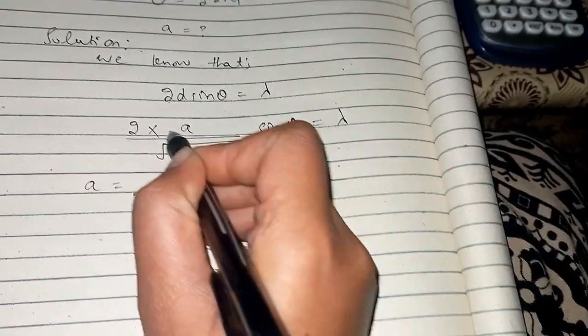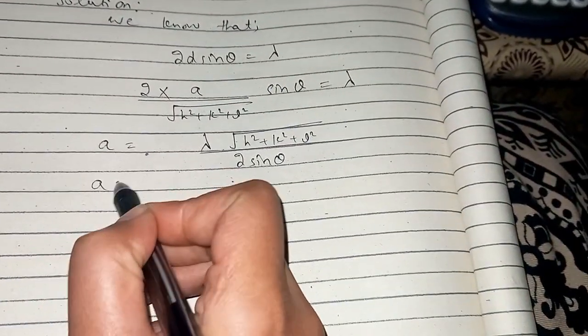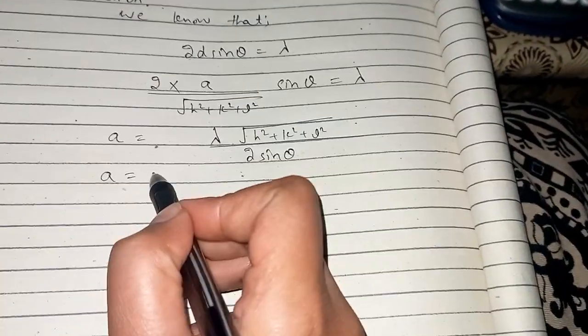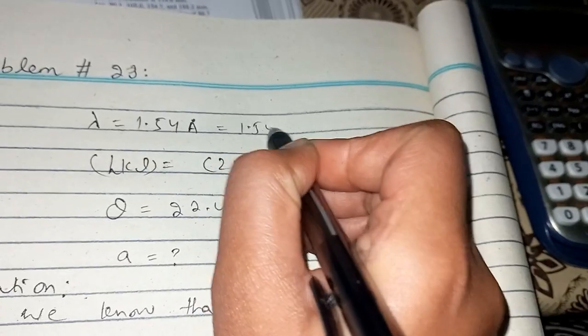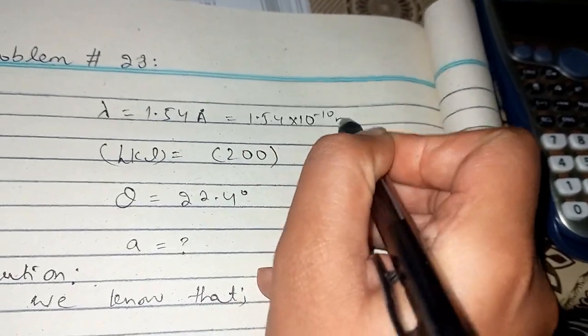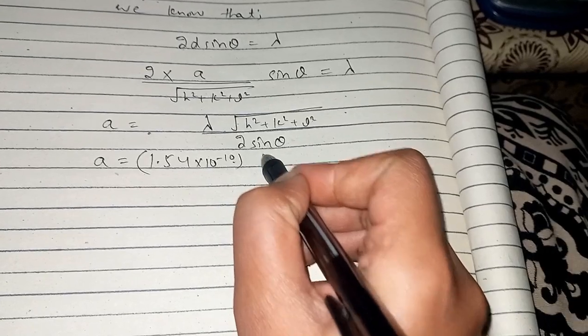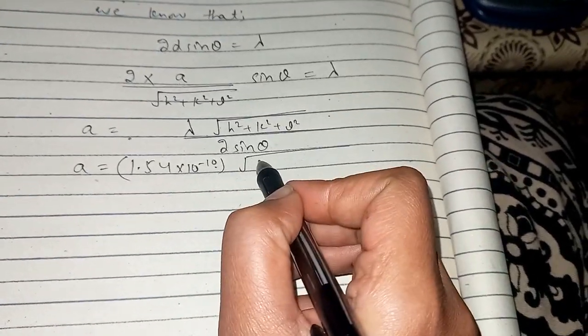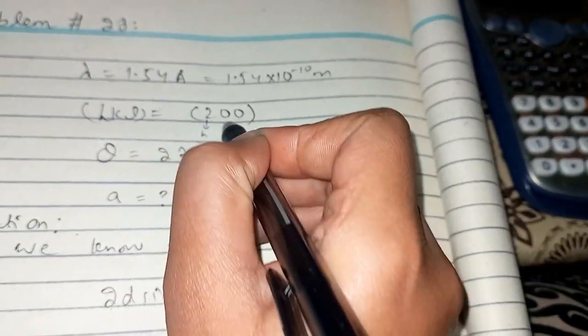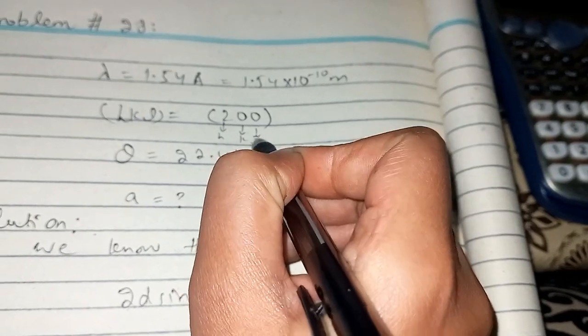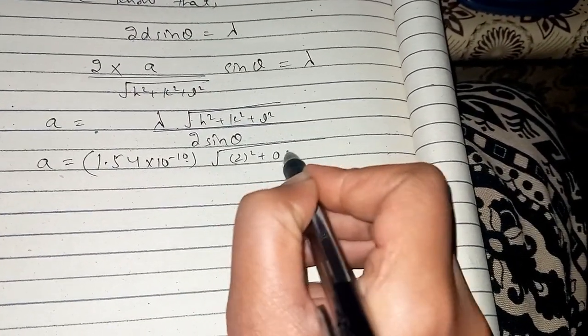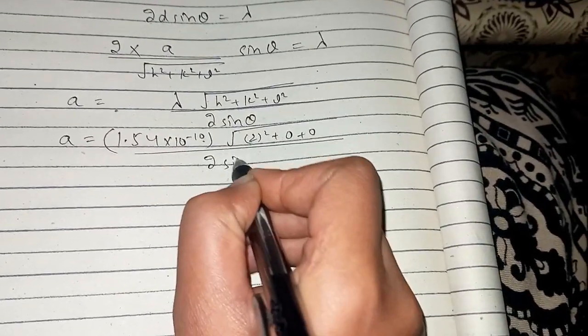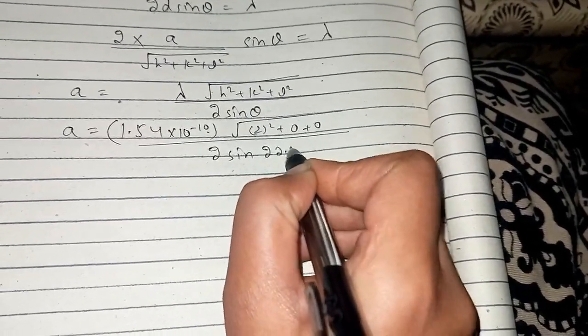Now let's substitute the values. Lambda value is 1.54 × 10⁻¹⁰ meters (Angstrom). The hkl values are given as 200, so h is 2, k is 0, l is 0. Theta is 22.4 degrees.